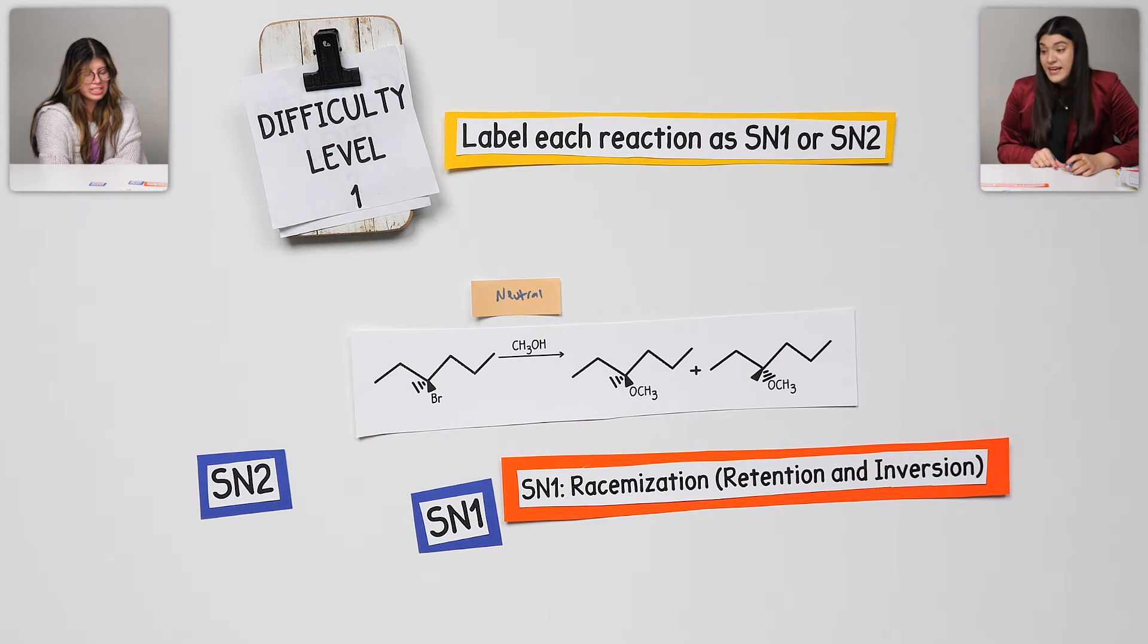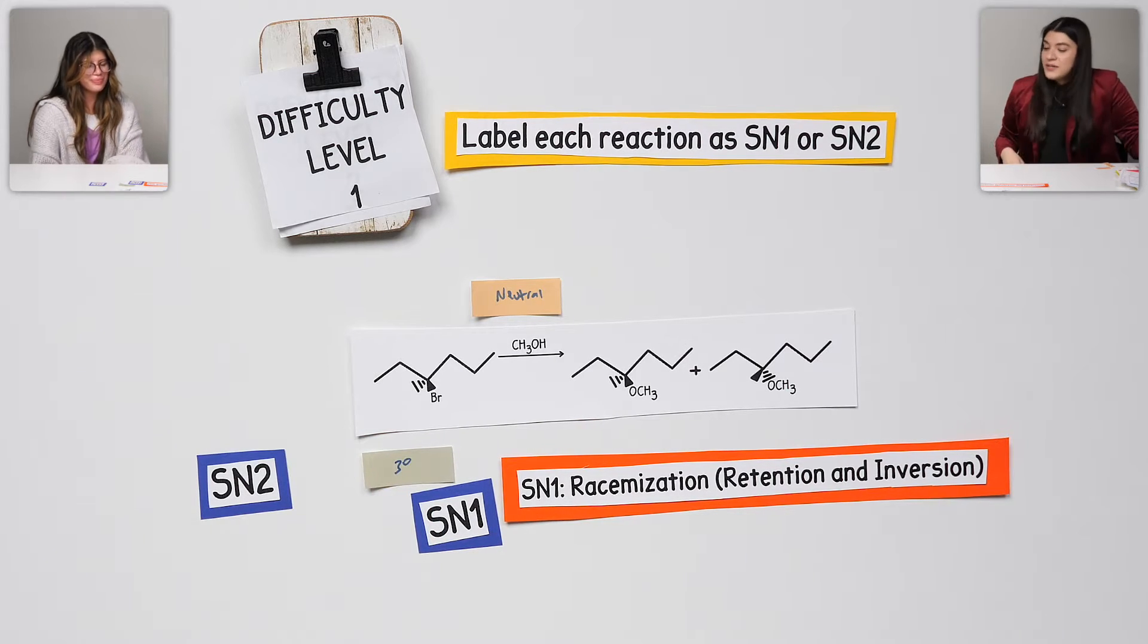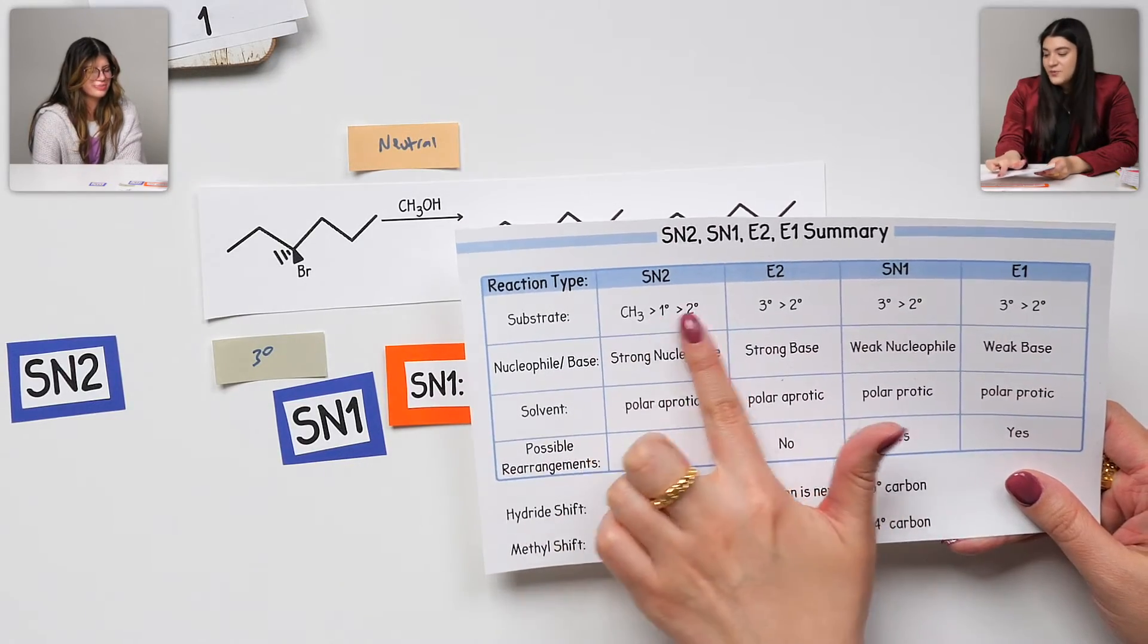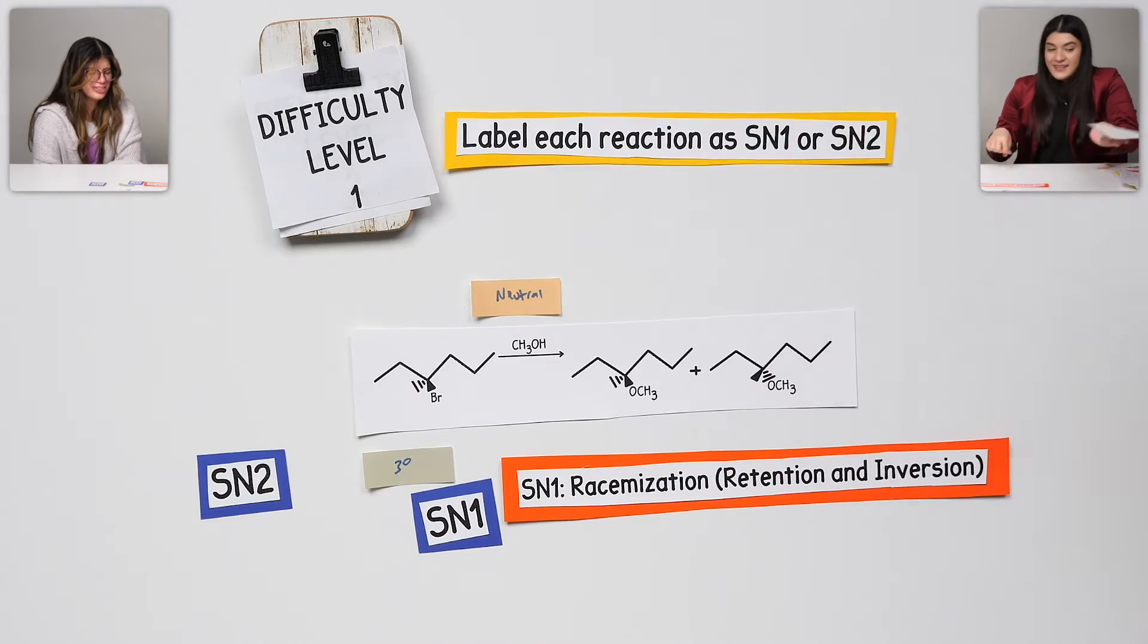Another thing is the fact that, how would we label this alkyl halide? Like what we categorize it? Yes, classify it. It would be tertiary. Good. Oh, okay. And that only works with SN1. That's another one that we could have seen, okay, that had to have been SN1, SN2 that doesn't work. There's a lot of reasons that we can kind of pinpoint what it is.